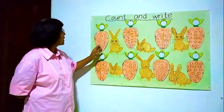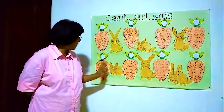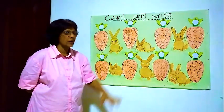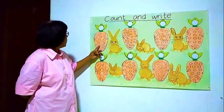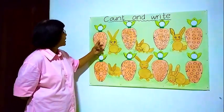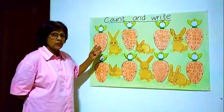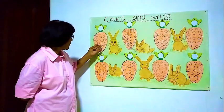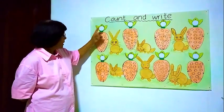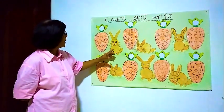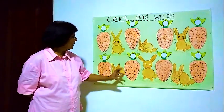Here are some carrots. 1, 2, 3, 4, 5, 6, 7, 8 carrots. Inside the carrots there are balls. So what we have to do? We have to count the balls that are inside the carrot and write the number here. And there are some rabbits here, looking at what we are doing.